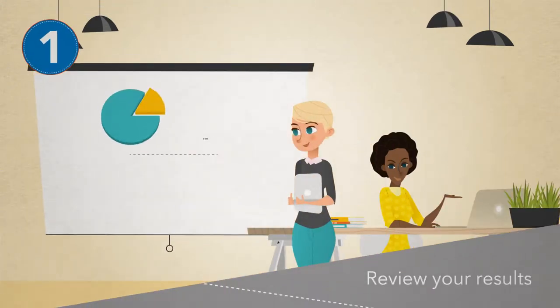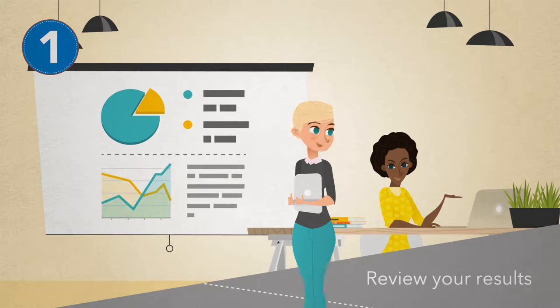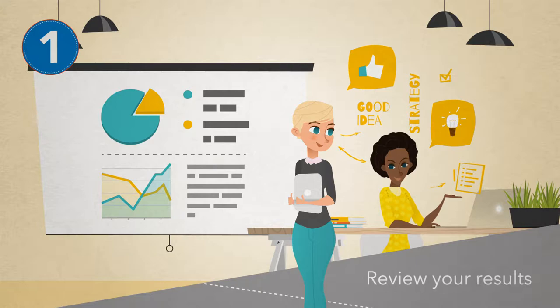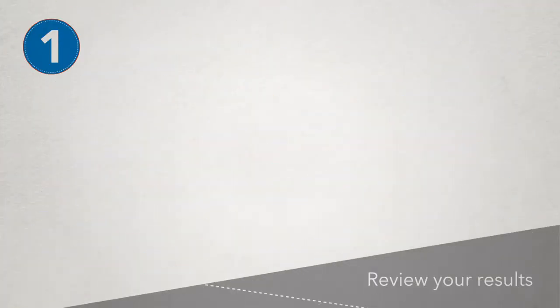First, review your results and think about what data stands out most. Think about the findings as they relate to strategic priorities for your work group and the organization. Which items have the most impact on these goals?